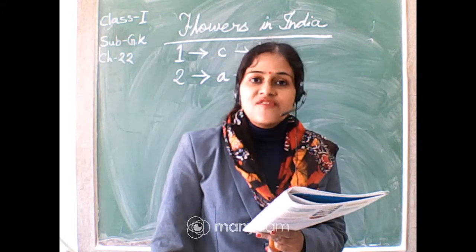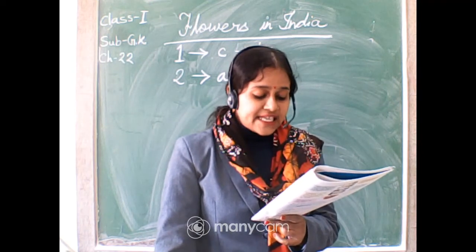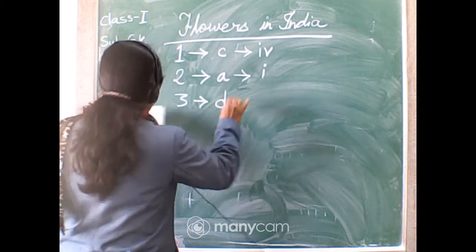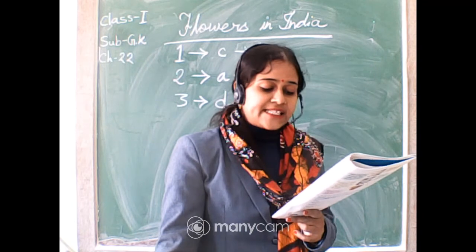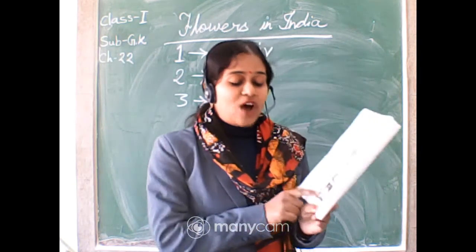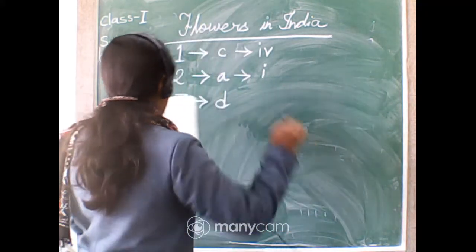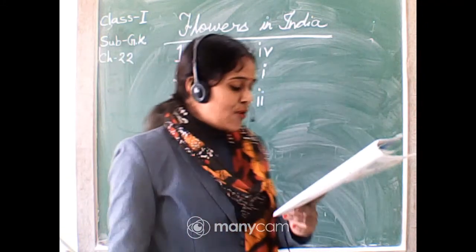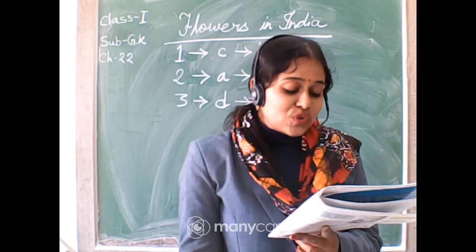The picture of Jasmine is D, so number three joins picture D. Jasmine is used to make little garlands and flower strings. Next, number four: Rose has a lovely scent.